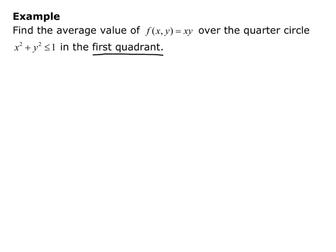We know the first quadrant is the only quadrant we're interested in, and that's where x and y are both greater than or equal to 0. So I sketch my quarter circle centered at the origin, radius 1, and that's going to be my region R.